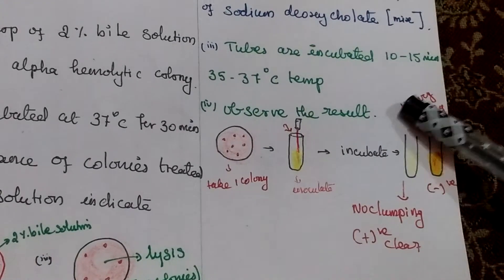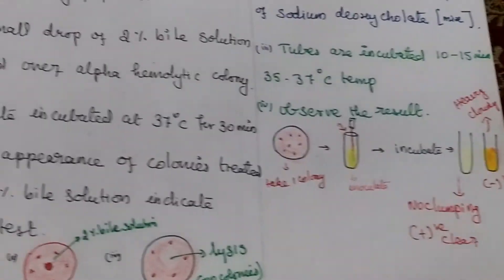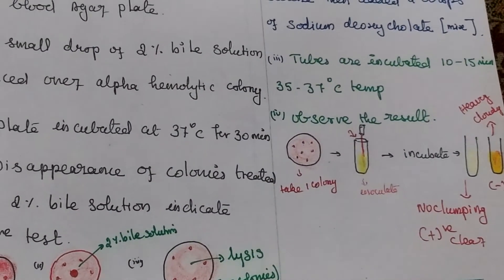Clumping will occur means negative. No clumping indicates a positive result. Based on this result we confirm that it's Streptococcus pneumoniae.